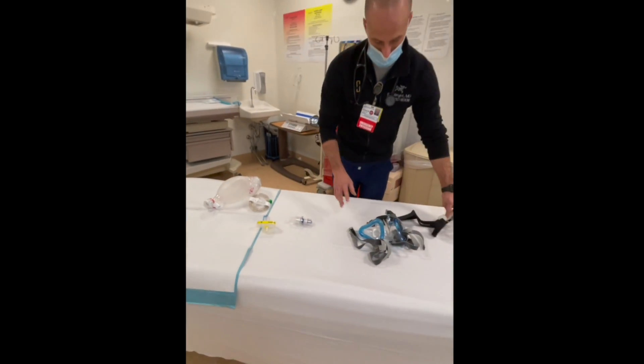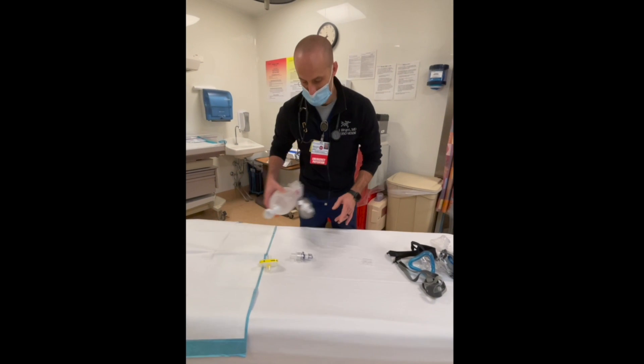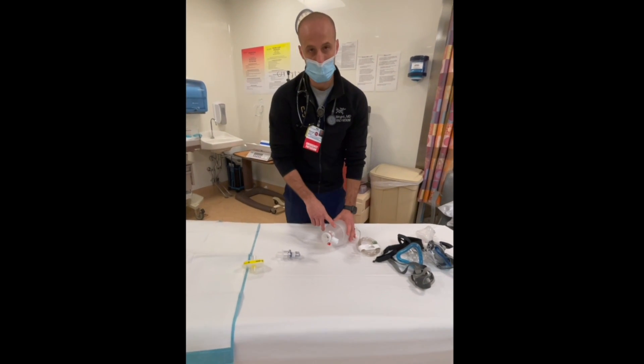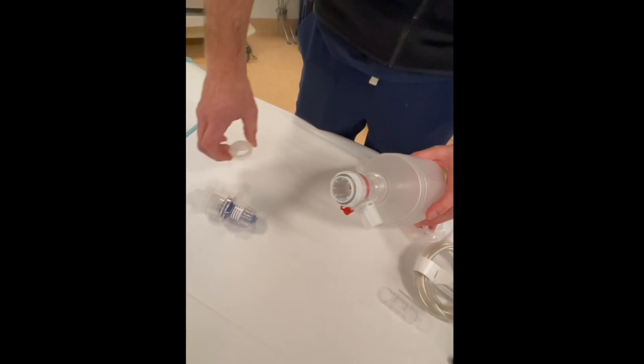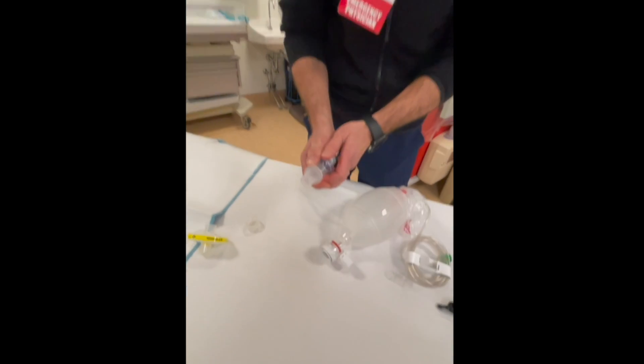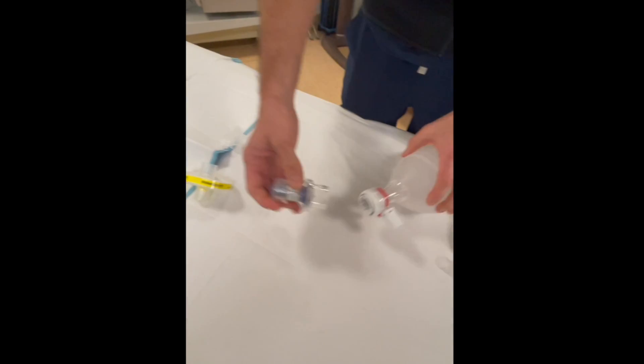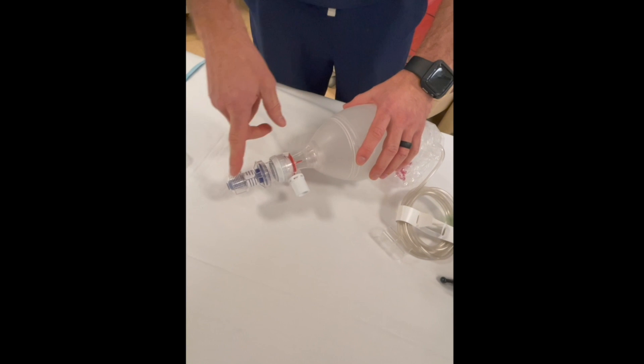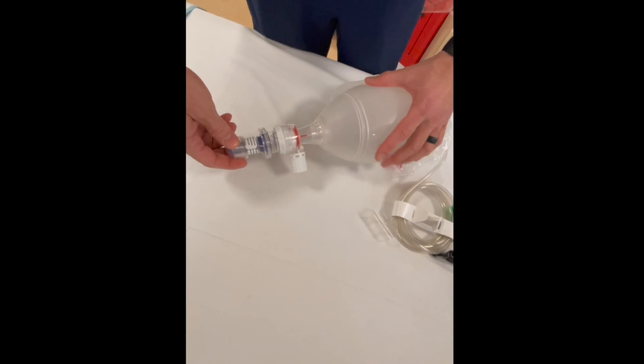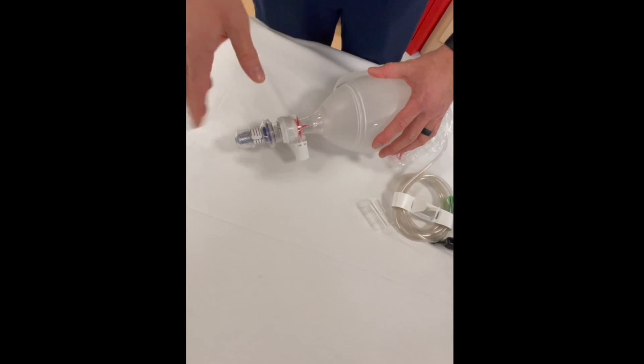On the bag valve mask on the end, you're going to see the exhaust port. You're going to remove this piece, remove the connector off of the PEEP valve, and then this is going to fit right on the end. This is actually going to provide your end expiratory pressure, and it's adjustable so you can go five, ten, or whatever you want.